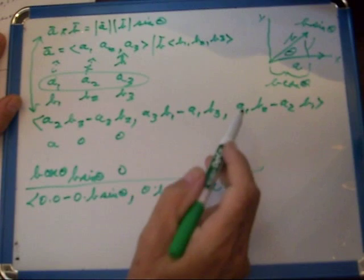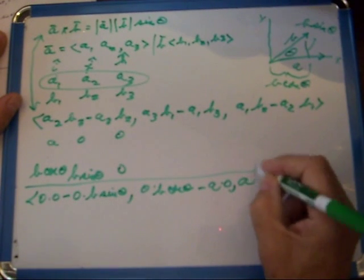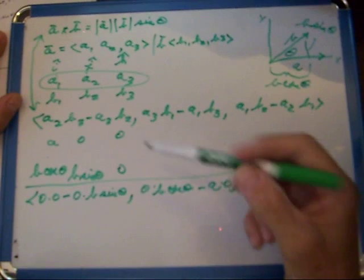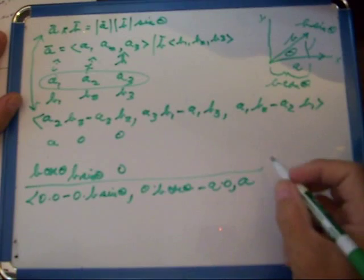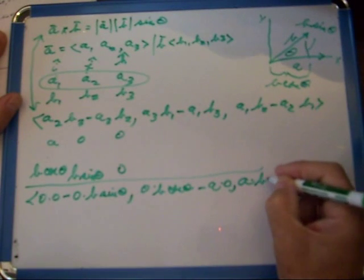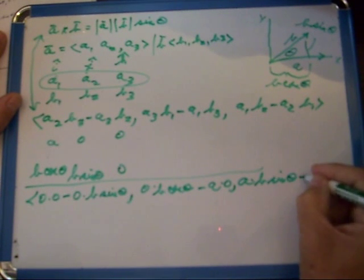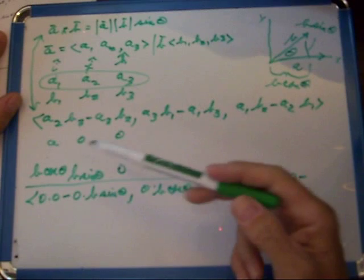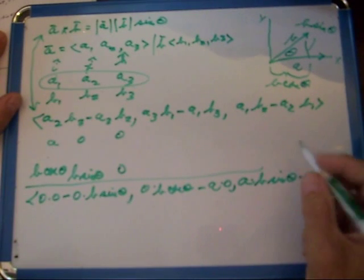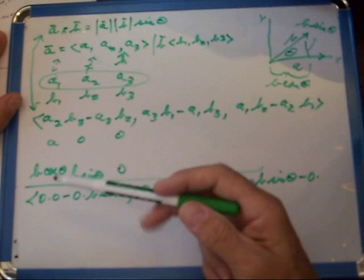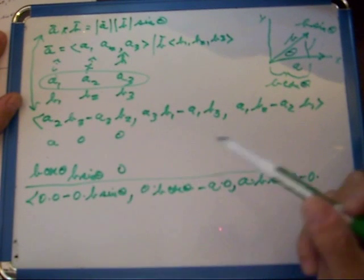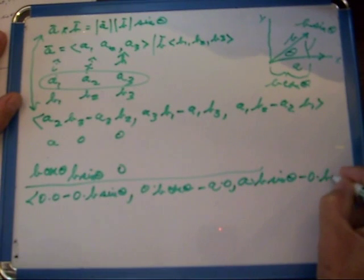A1, which is A, times B2, which is B sin theta, minus A2, which is zero, times B1, which is B cos theta.